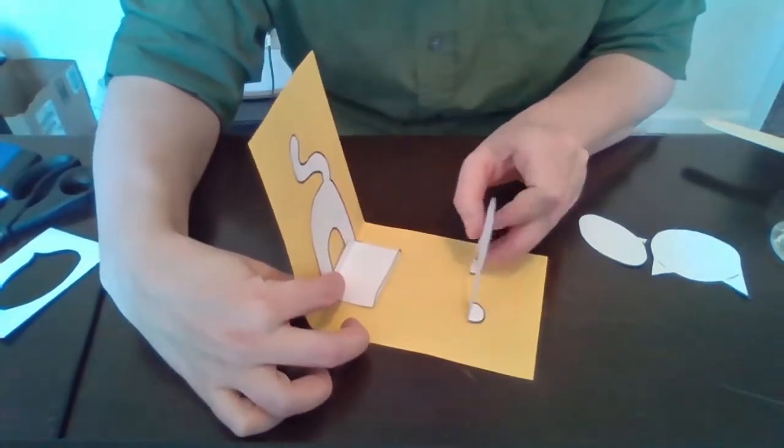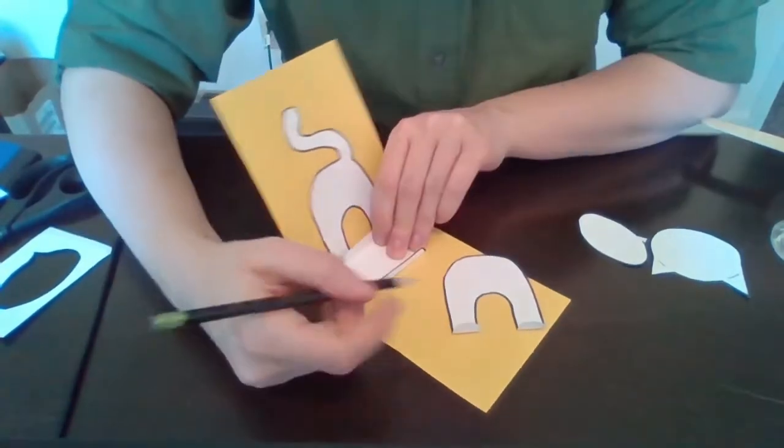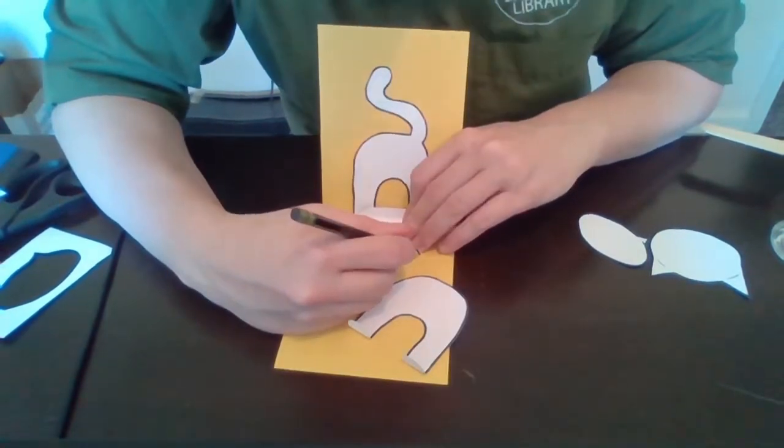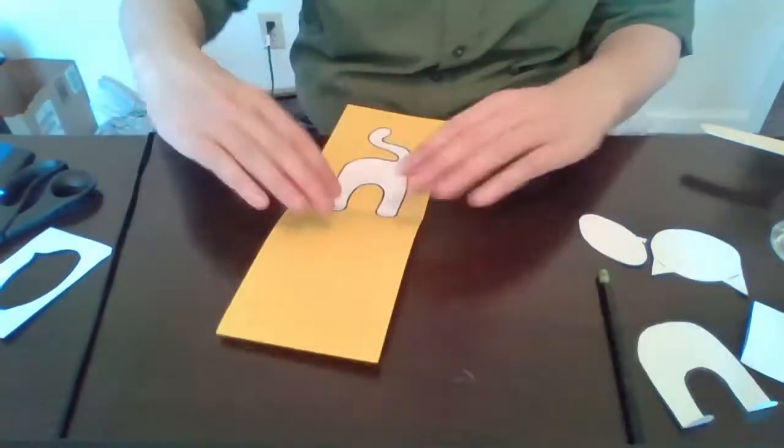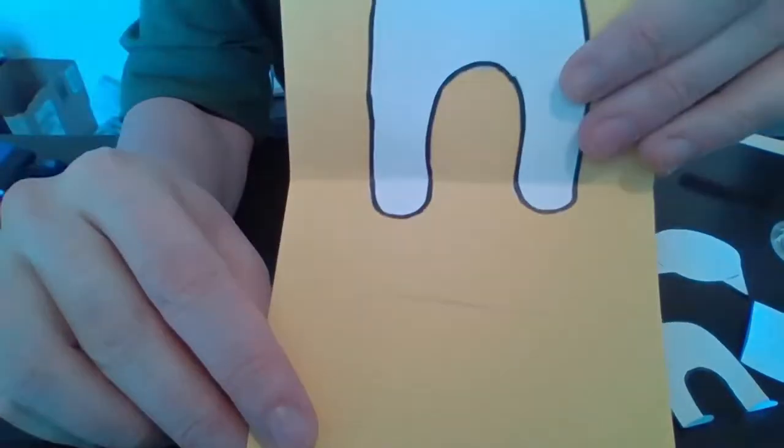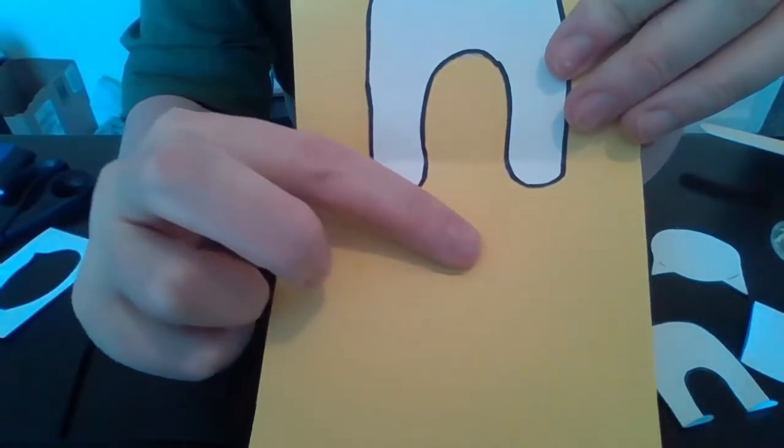And where this front piece is, I'm going to take my pencil, I'm going to make a little line so I know where to put the front feet. And the crease of the feet will go on this line.